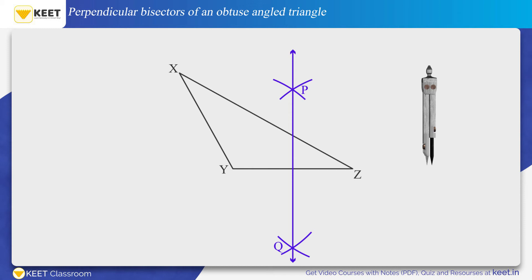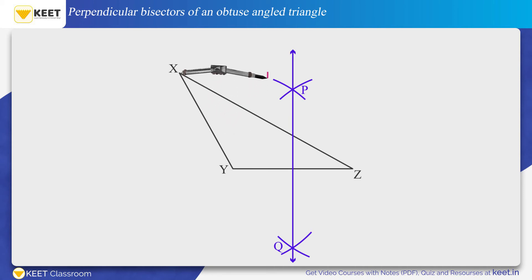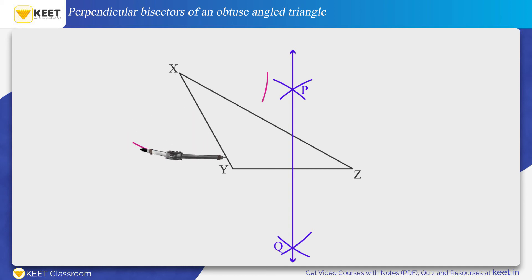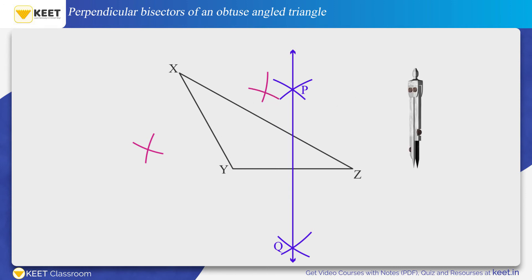Similarly, let us draw the perpendicular bisector of side XY. From vertex X, make arcs on both sides of XY as shown on the screen. From vertex Y, cut the arcs made from vertex X as shown on the screen. Name the intersection of the arcs as S and T respectively. Now draw a line passing through the points S and T. Thus, the line ST is the perpendicular bisector of side XY.